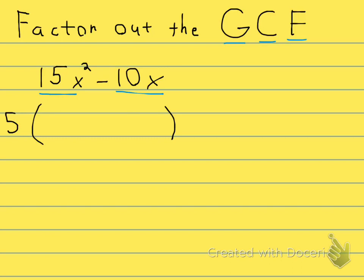in the first term I have x squared, two x's, and in the second term I only have one x. So how many x's can I take out of both of them? Can I take two x's out of both? No, I can't. I could take two x's out of the first one, but not the second one. There's only one x there. So my greatest common factor for the variable is just one x.